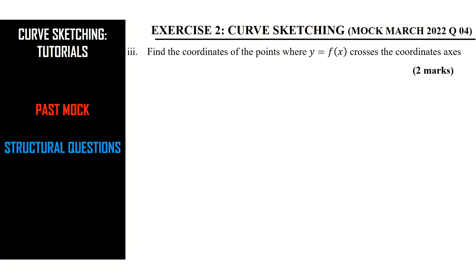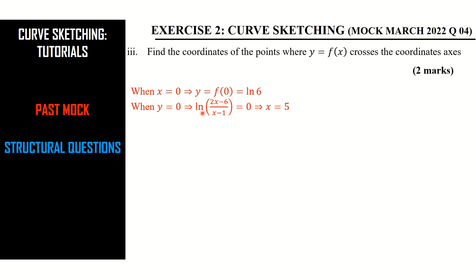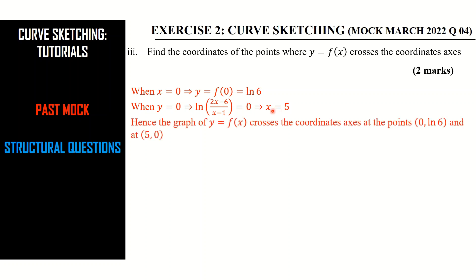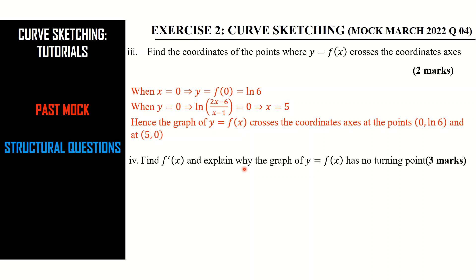Roman three asks us to find the coordinates where the function crosses the coordinate axes. When x = 0, y = f(0) = ln(6), giving the y-intercept. When y = 0, we solve ln((2x − 6)/(x − 1)) = 0 and get x = 5. So the graph crosses the coordinate axes at (0, ln 6) and (5, 0).